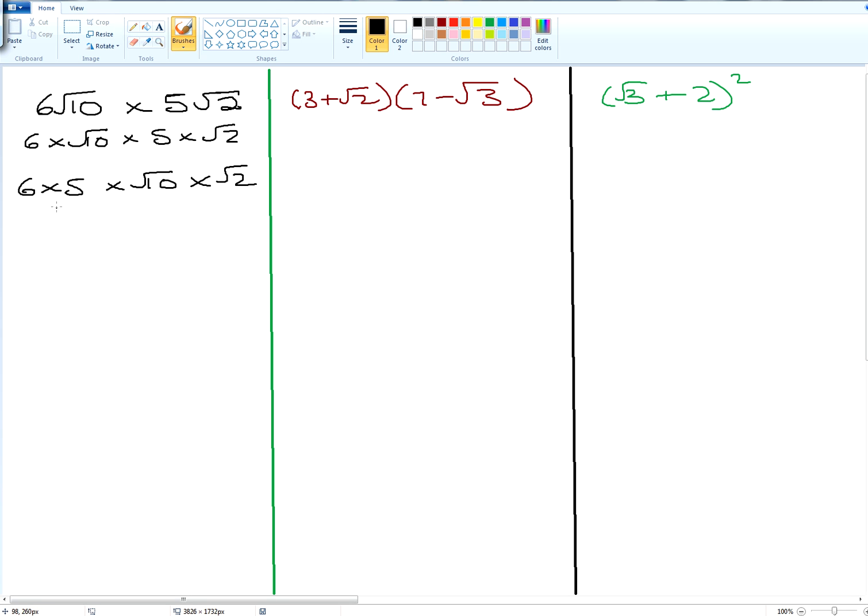Why? Because we can and it helps us do the question. So 6 times by 5 will give us 30. Root 10 times by root 2 will give us root 20, because we can put them back together again, 10 times by 2.